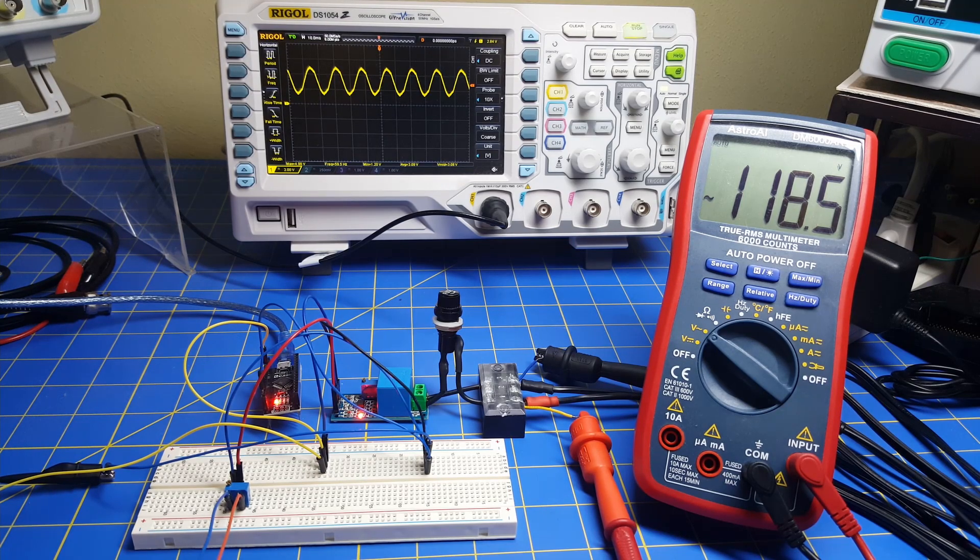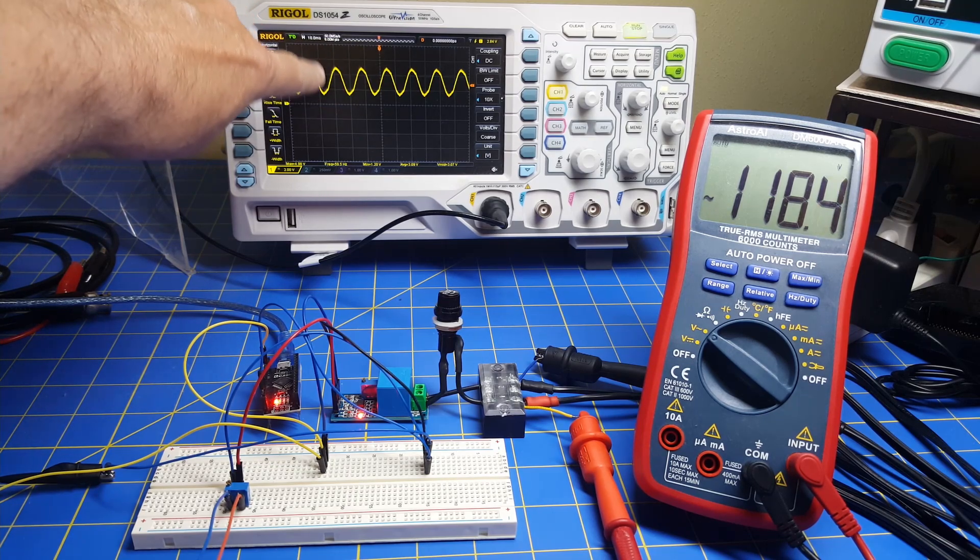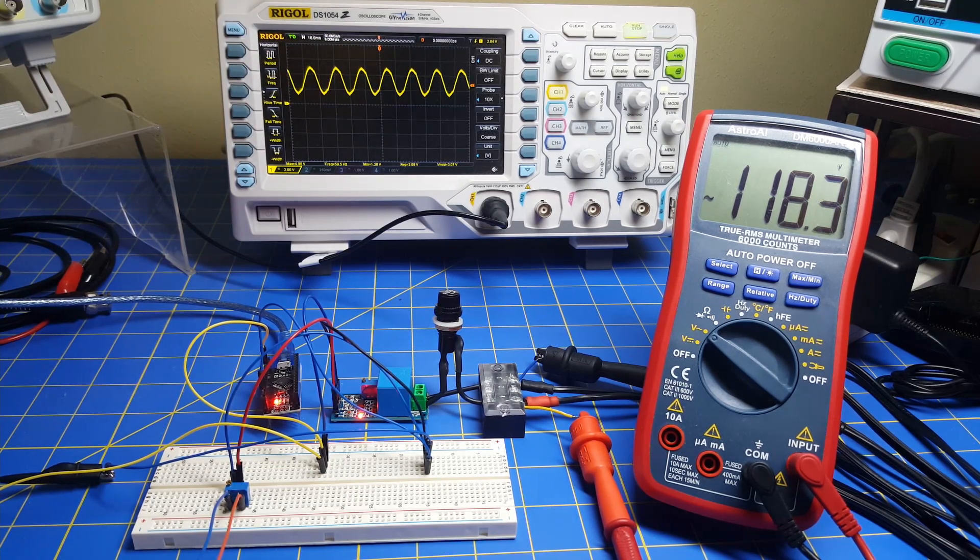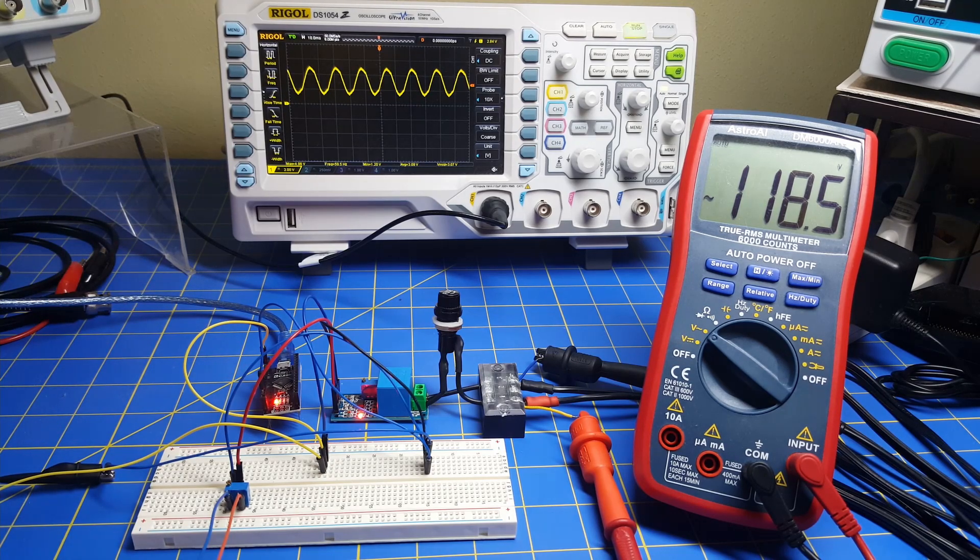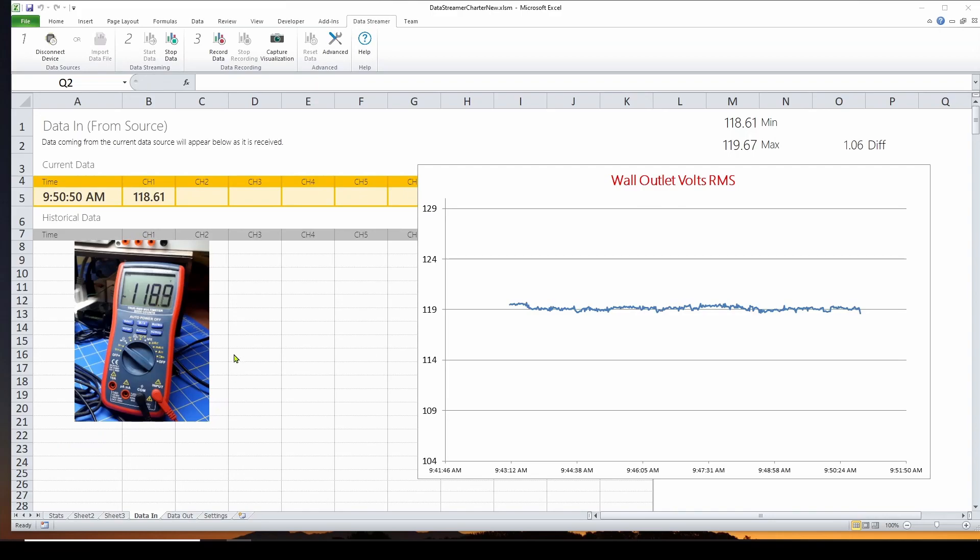What this is going to do is it's going to take the sine wave that appears at your wall outlet and it's going to calculate the RMS and send it out through an Arduino, which is right here, and it's going to go to your computer and you can log it and make CSV files and plot it and do whatever you want.